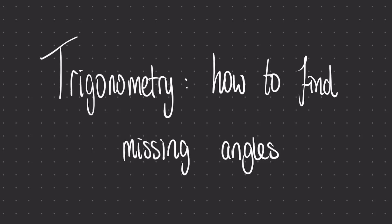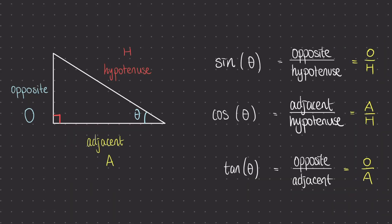In this video we're going to discuss how to find the missing angles using our trigonometric ratios. Just to remind ourselves, these are the three trig equations that we're going to need to use.